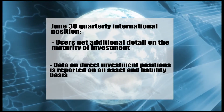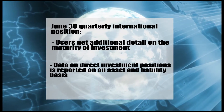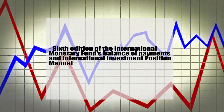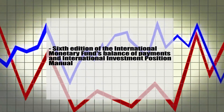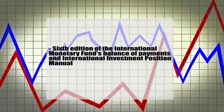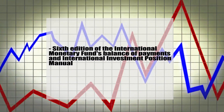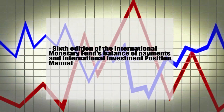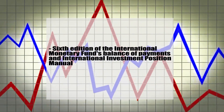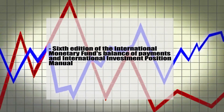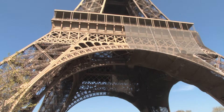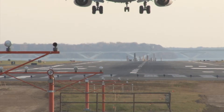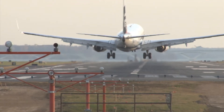These changes align U.S. data more closely with updated international guidelines, such as the 6th edition of the International Monetary Fund's Balance of Payments and International Investment Position Manual. Keeping up with the international guidelines makes it easier for users to compare U.S. data with data from our major trade and investment partners. Several industrialized countries have already incorporated these new standards into their international accounts.